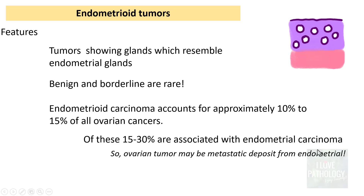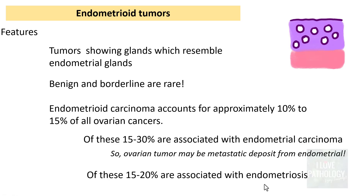Of endometrioid carcinomas diagnosed, 15 to 30 percent are associated with endometrial carcinoma, meaning the ovarian tumor can be a metastatic deposit from endometrial carcinoma. Additionally, around 15 to 20 percent of endometrioid carcinomas are associated with endometriosis. Whenever you encounter a case of endometrioid carcinoma of the ovary, always look for evidence of endometrial pathology in the uterus or associated endometriosis.